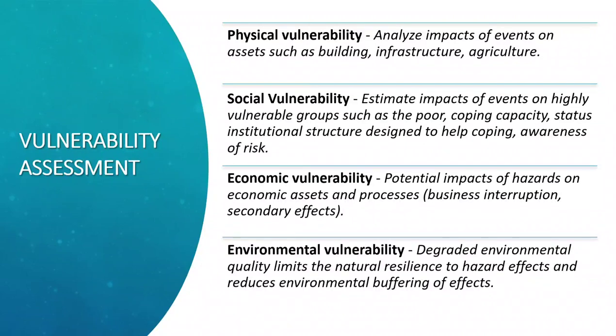Physical vulnerability analyzes the impacts of events on assets such as building infrastructure and agriculture. Social vulnerability estimates the impacts of events on highly vulnerable groups such as the poor, coping capacity, status of institutional structures designed to help coping, and creation of awareness of risk. Economic vulnerability refers to the potential impact on businesses and its interruption followed by secondary effects. Environmental vulnerability is about how degraded environmental quality limits natural resilience to hazard effects and reduces environmental buffering.